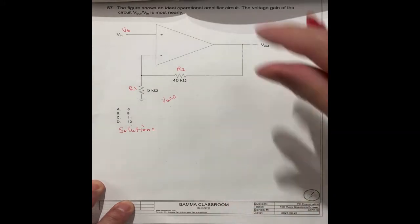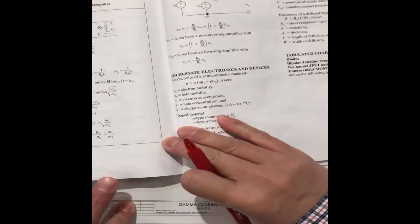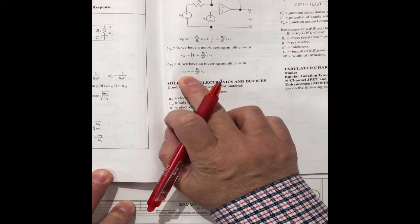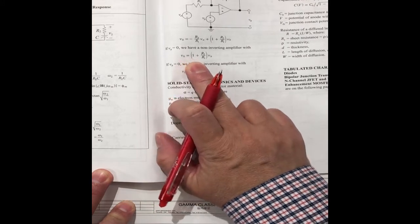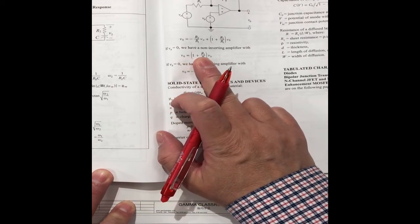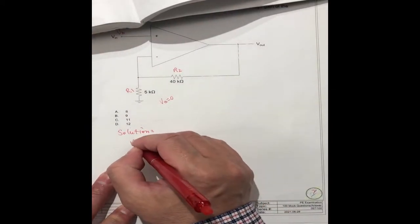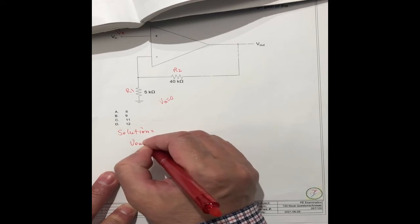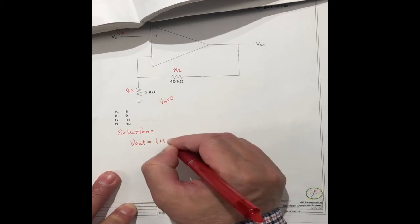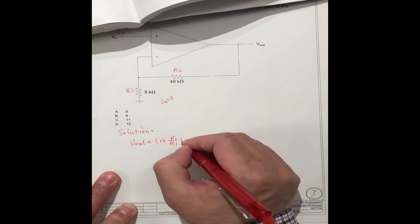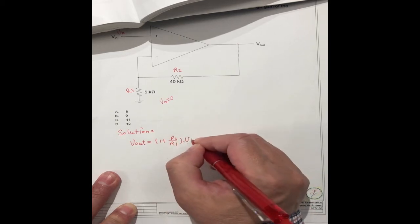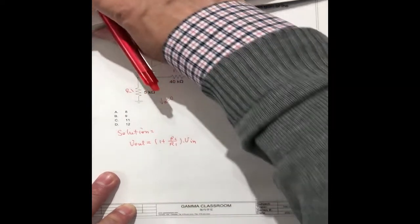We know the formula is V0, V output, V0 equals 1 plus R2 divided by R1 times VB. So V output equals 1 plus R2 divided by R1 times V input.